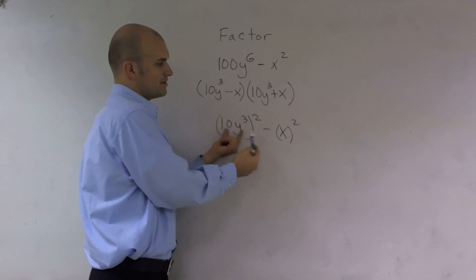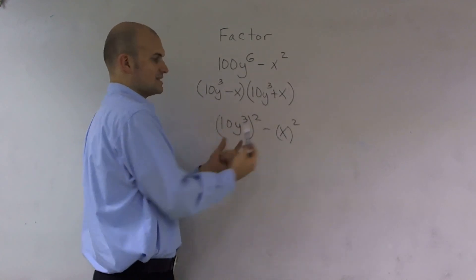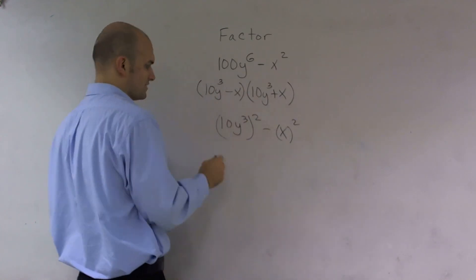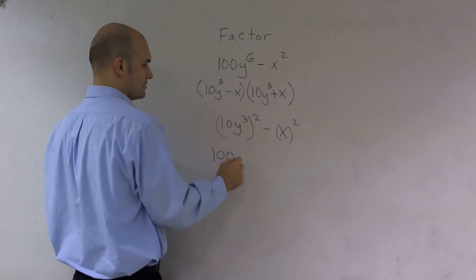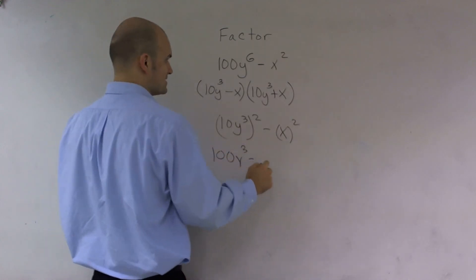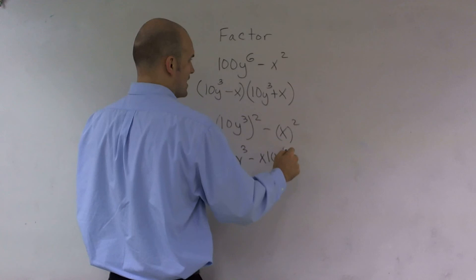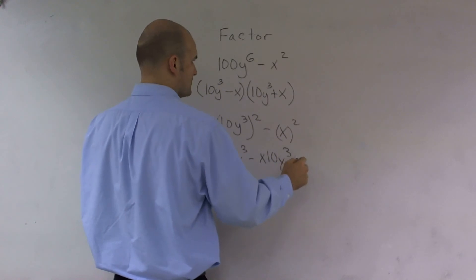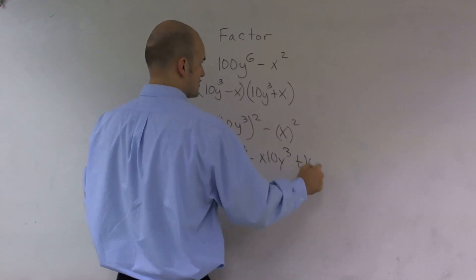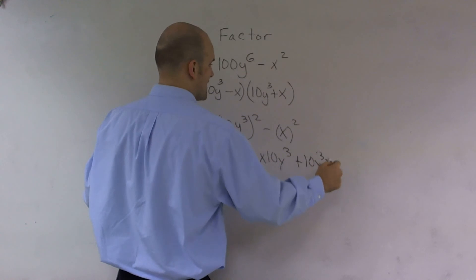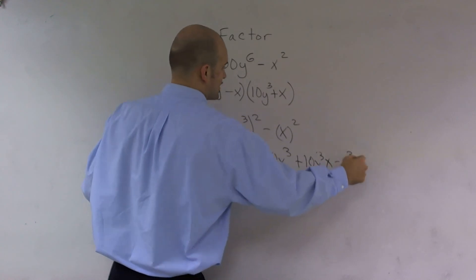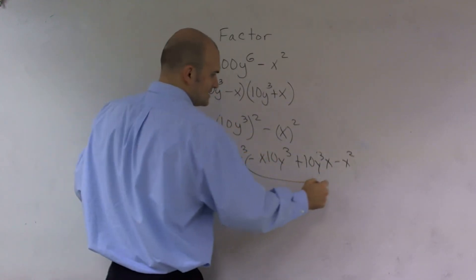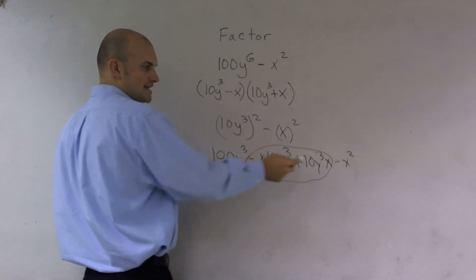So it's called a difference of two squares. If I was to multiply this out, I would get 100y⁶ minus 10xy³ plus 10xy³, and then minus x². And what you notice is these two terms, one's negative and one's positive, but they're exactly the same term.